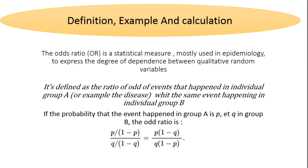Odds ratio is also defined as a ratio of odds — the odds of an event happening in individual group A, for example the disease, compared to the same event happening in individual group B. Odds is a ratio of the probability of an event to the probability of the contrary of the event. If the probability that an event happens in group A is P, and Q is the probability in group B, the odds ratio is calculated as follows.